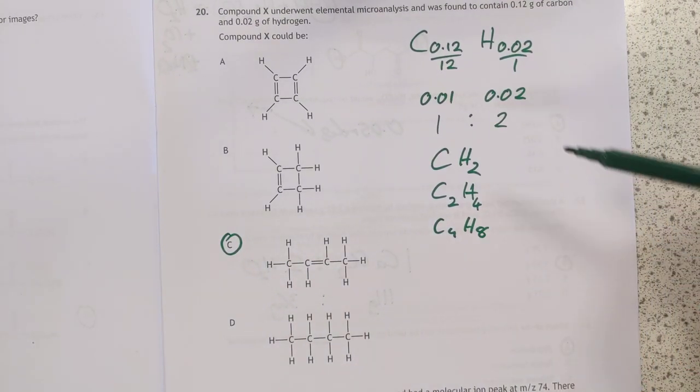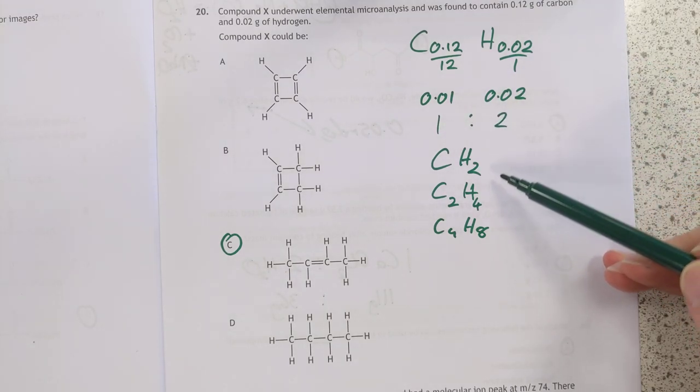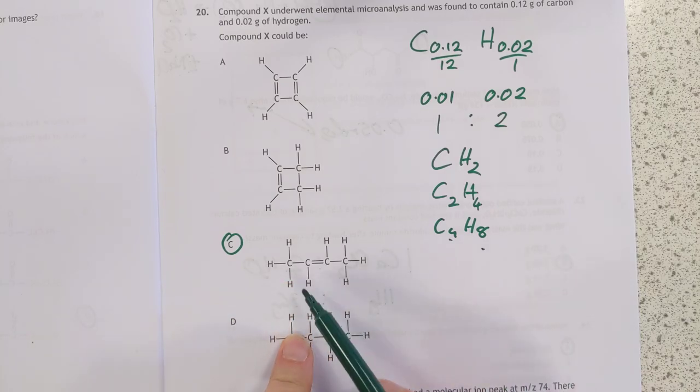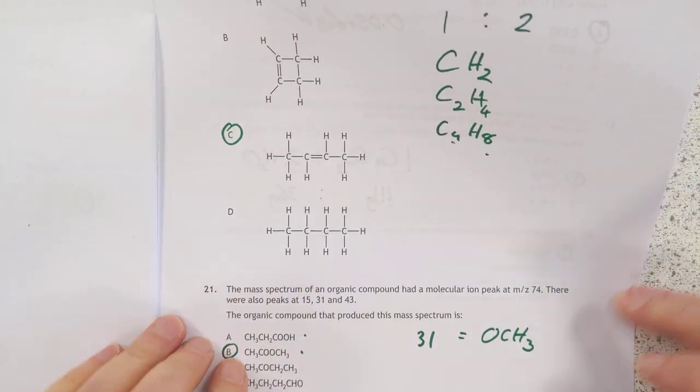Number 20. Empirical formula time. It's a ratio of 1 to 2, which we scale up to find 4 to 8, which is this here, isn't it? 2, 4, 6. Yes, it is.